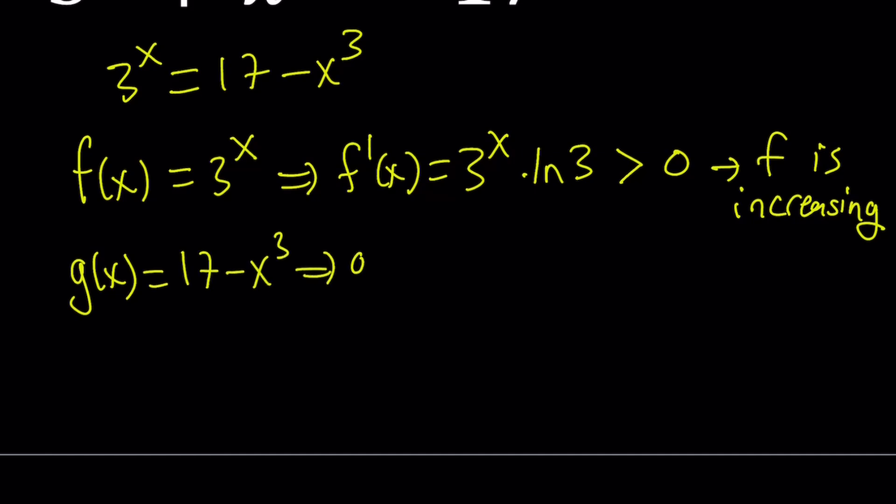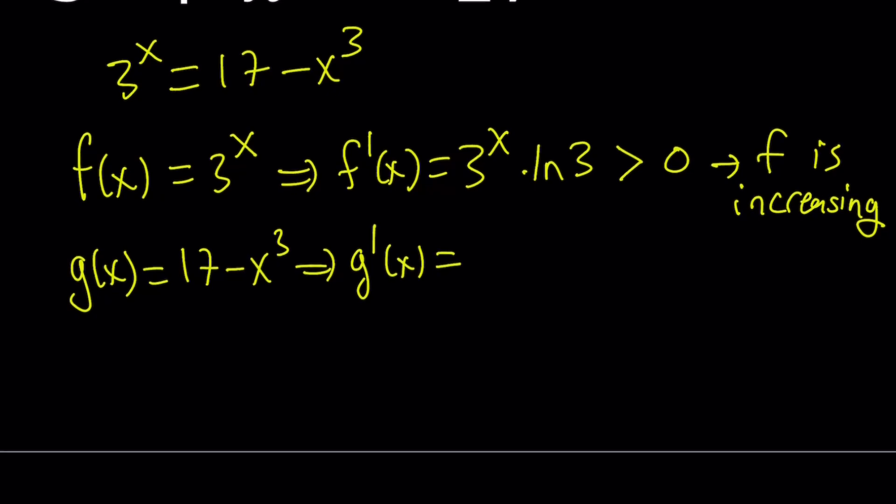Let's differentiate it too. If you do differentiate it, the derivative of 17 is 0. The derivative of negative x cubed is just going to be negative 3x squared. And as you know, this is always negative as long as x does not equal 0. At 0, we're going to see what happens. But this basically indicates, except for x equals 0, g, which is the second function here, is decreasing because its first derivative is negative on that interval.